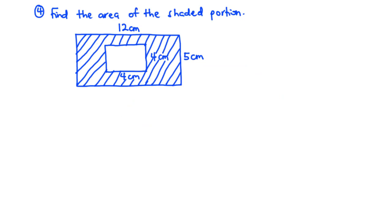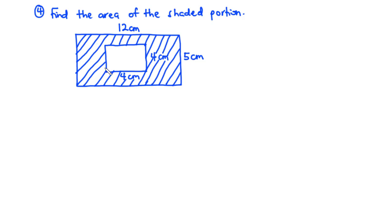For example 4: find the area of the shaded portion. We have a figure made up of a rectangle with a square inside it. The square has sides of 4 centimeters each. To find the area of the shaded portion, we find the area of the rectangle, then subtract the area of the square.